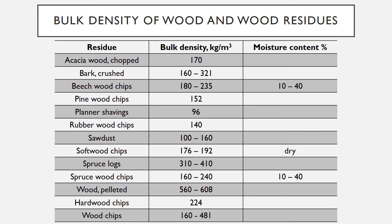Rubber wood chips: 140 kilograms per cubic meter. Sawdust: 100 to 160 kilograms per cubic meter. Softwood chips: 176 to 192 kilograms per cubic meter, dry moisture content. Spruce logs: 310 to 410 kilograms per cubic meter. Spruce wood chips: 160 to 240 kilograms per cubic meter, 10 to 40 percent moisture content.